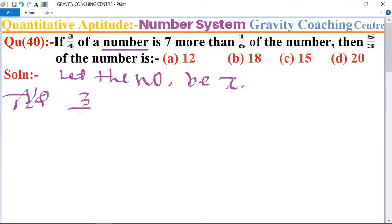3/4 of number x equals 7 more than 1/6 of the number, which means 3/4 x = 1/6 x + 7.